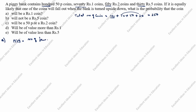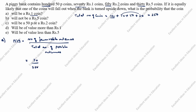P(E) equals number of favorable outcomes divided by total number of possible outcomes. For a rupee 1 coin, favorable outcomes are 70. So 70 divided by 250 — cancel the zeros — the final answer is 7 by 25.